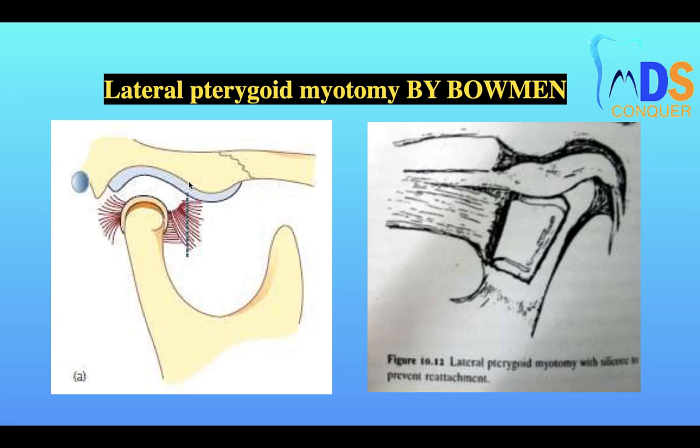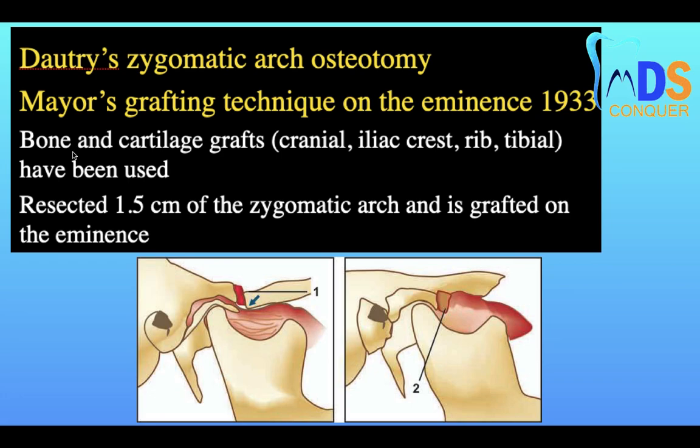Lateral pterygoid myotomy involves freeing the disc from the lateral pterygoid muscle attachment anteriorly, as described by Bowen. The Dautrey zygomatic arch osteotomy and maze grafting technique on the eminence, described in 1933, involves intentionally fracturing the zygomatic arch and grafting it to the eminence to provide a mechanical obstruction, preventing the condyle from moving in front of the articular eminence.